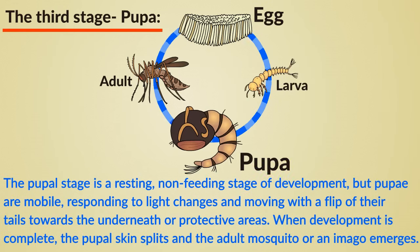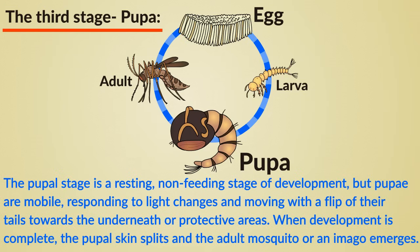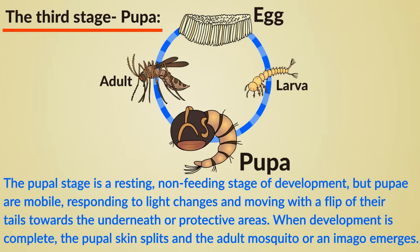The third stage: pupa. The pupal stage is a resting, non-feeding stage of development. But pupae are mobile, responding to light changes and moving with a flip of their tails towards underneath or protective areas. When development is complete, the pupal skin splits and the adult mosquito, or imago, emerges.